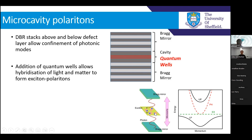The lower down on the lower polariton branch you go, the more photonic your particles are — the more time they spend as a photon. The closer to the exciton resonance, the more excitonic they are. You get a varying degree of each component as you follow the momentum. We focus on the lower polariton branch in this work.